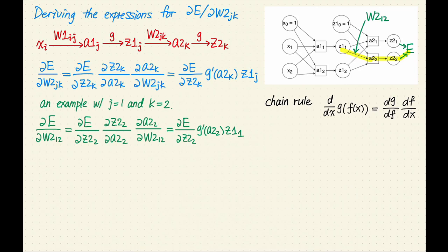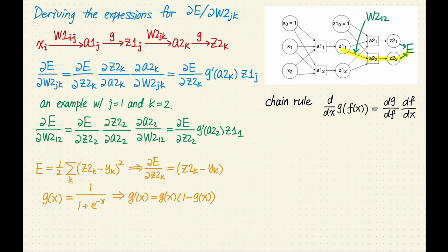If you want to make this expression even more concrete, you'd have to pick the error function E and the activation function g. Here are two examples. For these examples, the error function is the sum of the square difference between the actual output and the expected output, and the activation function is the sigmoid function.